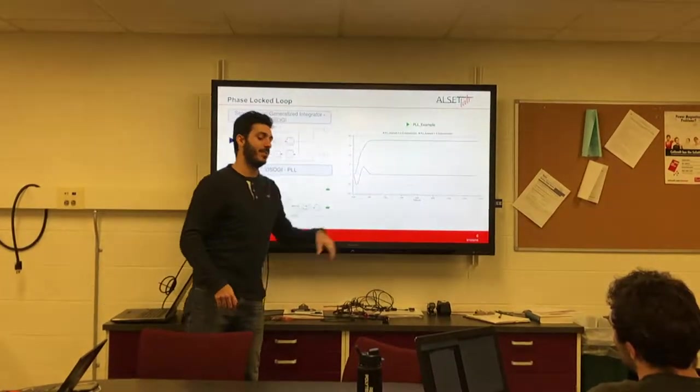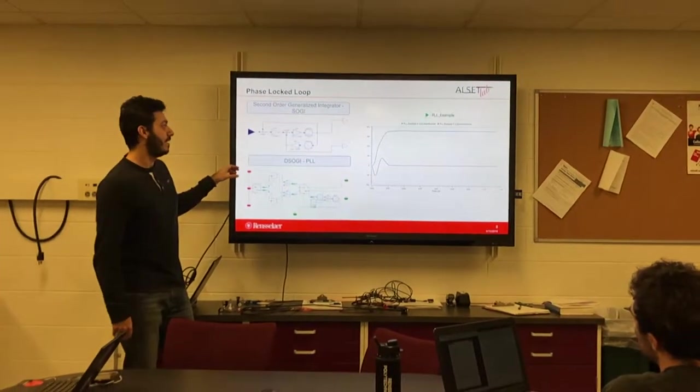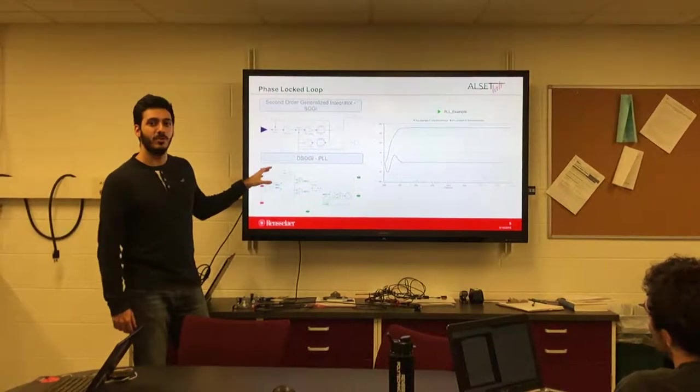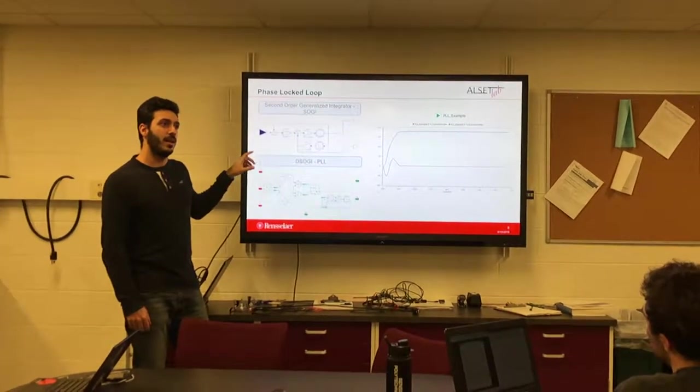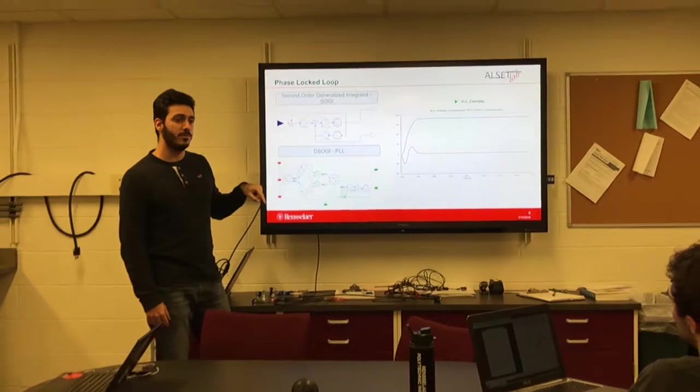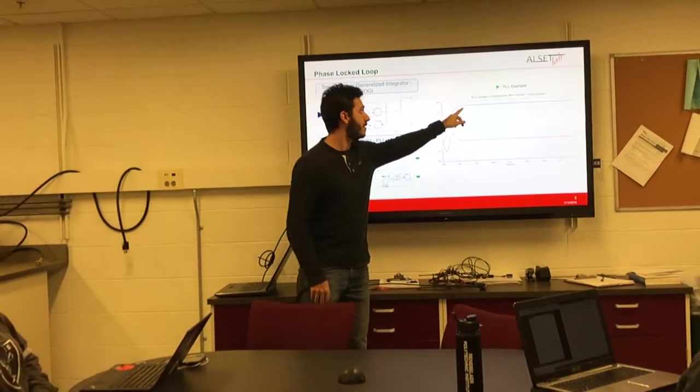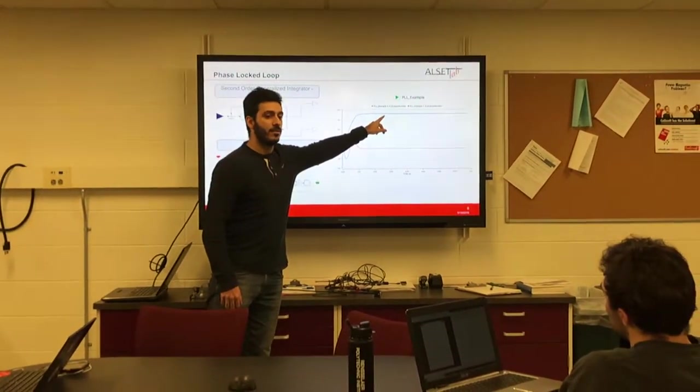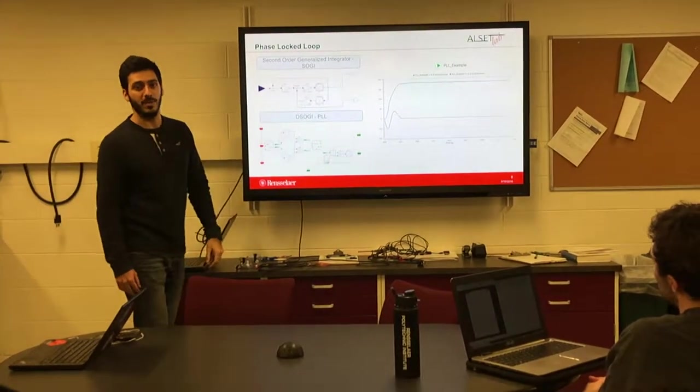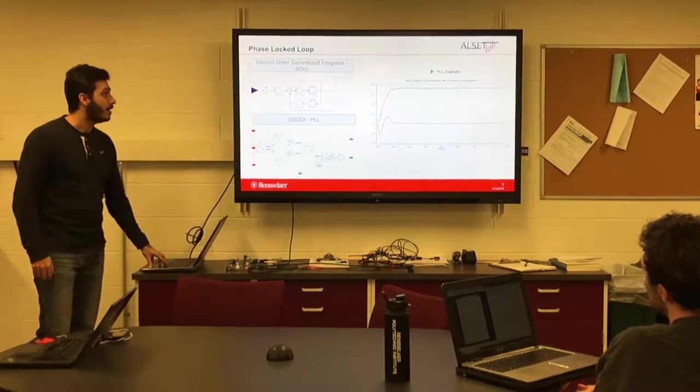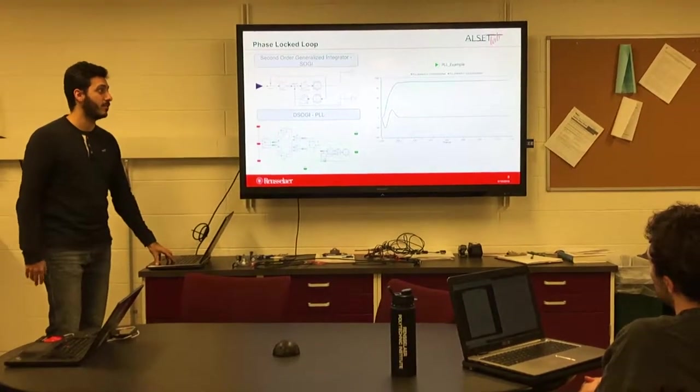It's in the PLL example, in the library, if you download it. I was trying to synchronize, to make this circuit to synchronize with 180 volts amplitude. And here, you can see that it synchronizes to the 180 volts. So, it's working properly. This is essential for connecting something to the grid.